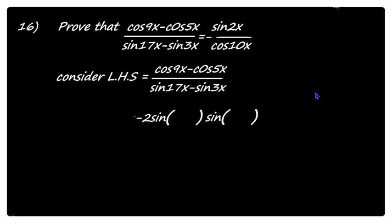That is minus 2 sin into sin. Here x is 9x and y is 5x. So we get minus 2 sin((9x+5x)/2) into sin((9x-5x)/2).